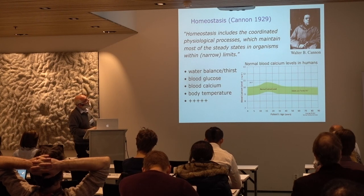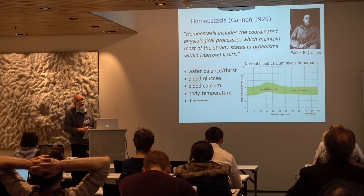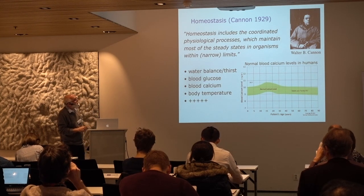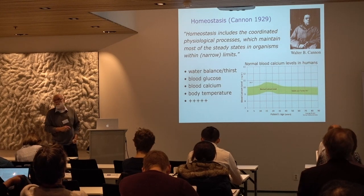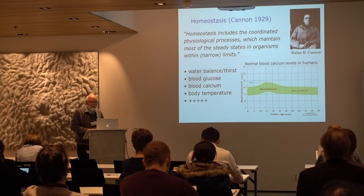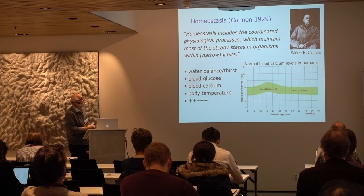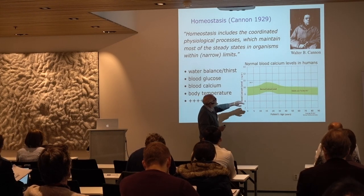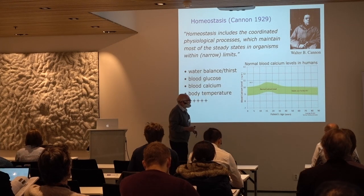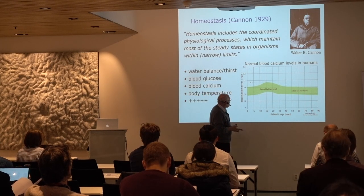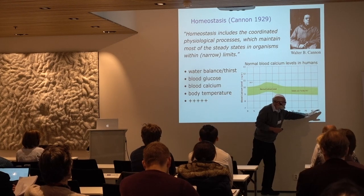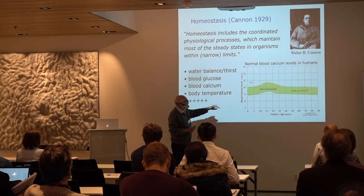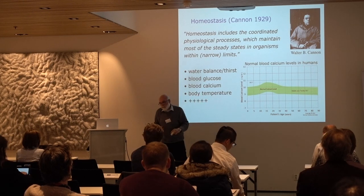Our main objective is homeostasis, which was defined in a seminal paper by Walter Cannon in 1929, where he describes homeostasis as the coordinated physiological processes which maintain most of the steady states in our organisms within narrow limits. What you see here is typically the blood calcium levels for humans, from birth to age 19, and you see that blood calcium levels are pretty much between 9 and 10 milligrams per deciliter blood.